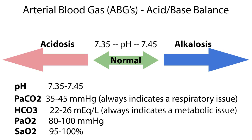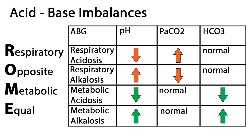PaO2, the partial pressure of oxygen, is 80 to 100 mmHg, and SaO2 is the oxygen saturation, ranging from 95 to 100%. When studying acid-base imbalances, it is helpful to remember ROME: respiratory opposite, metabolic equal. Both respiratory acidosis and alkalosis have arrows going in the opposite direction for pH and CO2. Metabolic acidosis has both arrows going down, and metabolic alkalosis has both arrows going up. For a more detailed explanation, see our video on blood gases.